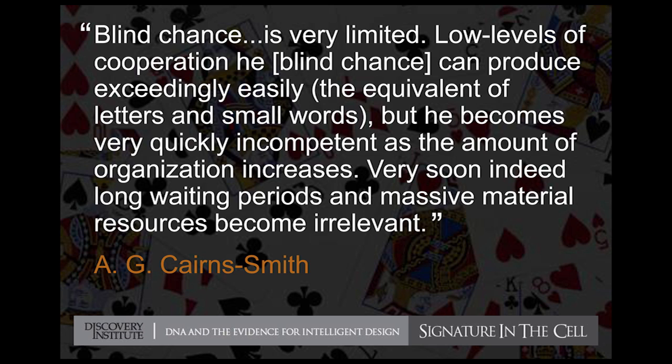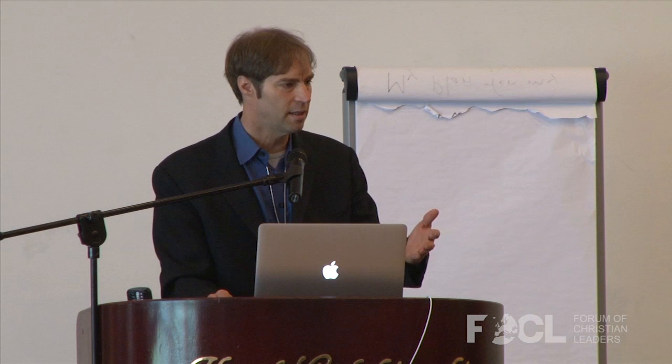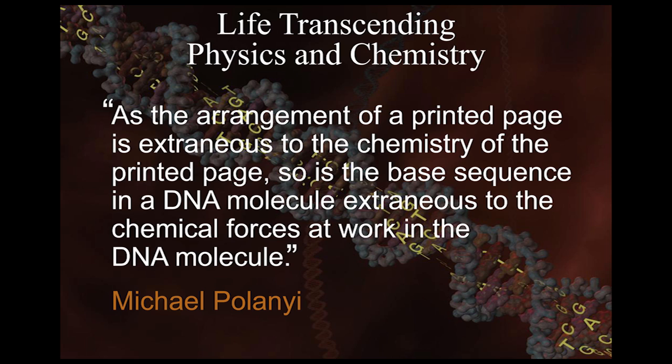There's a second problem that makes the origin-of-information problem especially acute: information is not reducible to physics and chemistry. This was first pointed out about DNA by the famous Hungarian physical chemist Michael Polanyi. He noted that the arrangement on a printed page is extraneous to the chemistry of the page — information in a book is not the product of the chemistry of the paper. Similarly, the base sequence in a DNA molecule is extraneous to the chemical forces at work in a DNA molecule.